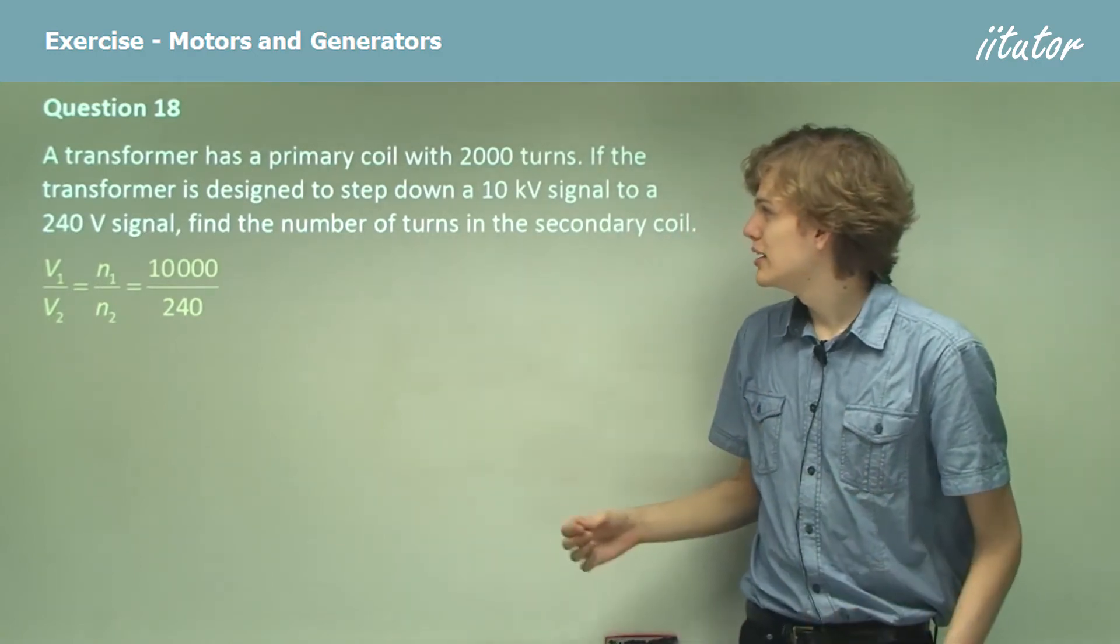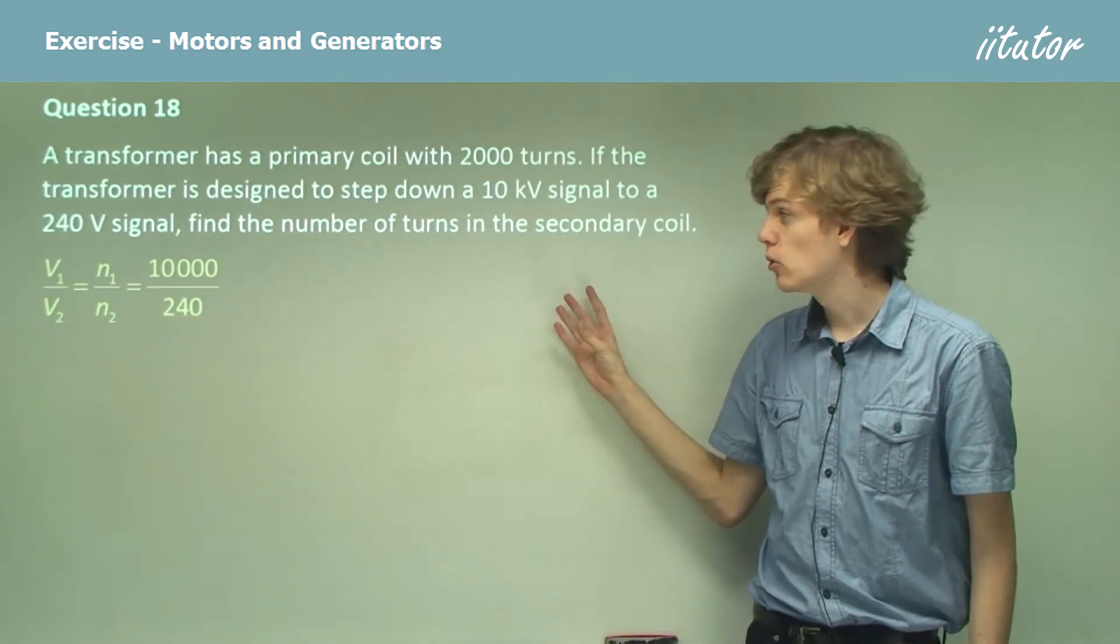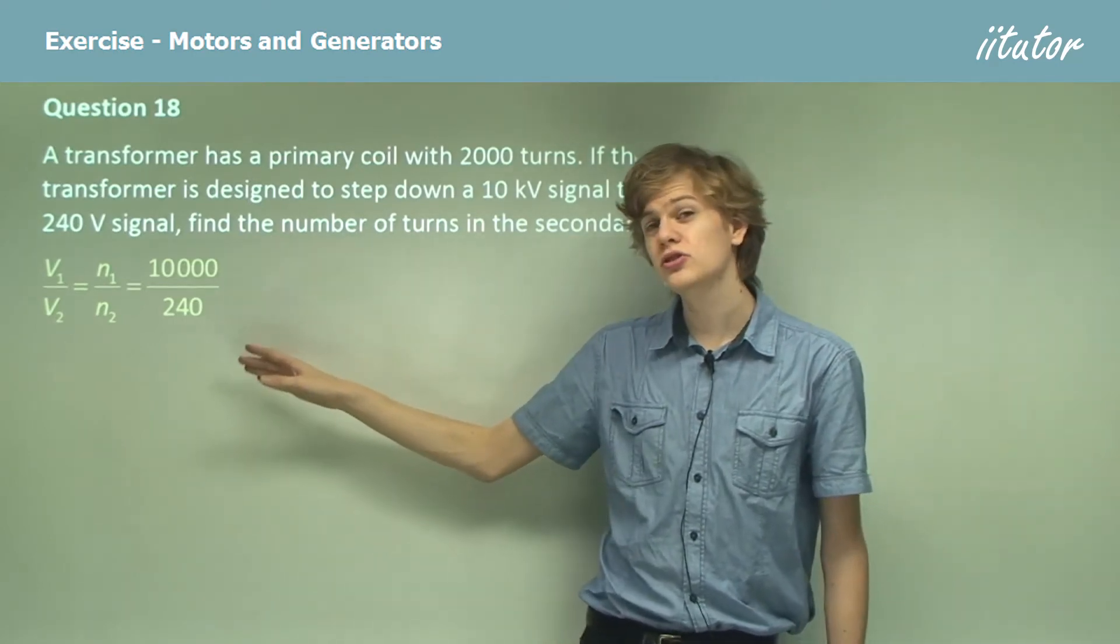Now what we want to do is work out the number of turns in the secondary coil, so we need to make N2 the subject of the equation.